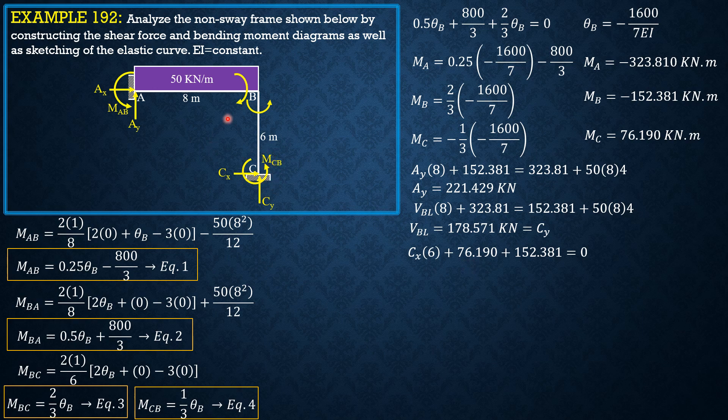So that means Cx is negative 38.095, so it is leftward. I assumed it is rightward, both Ax and Cx.